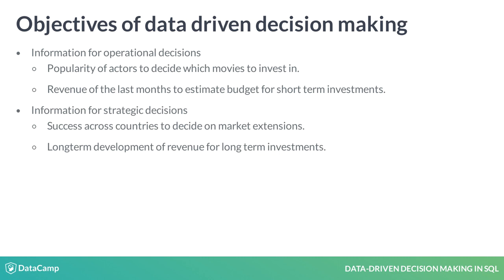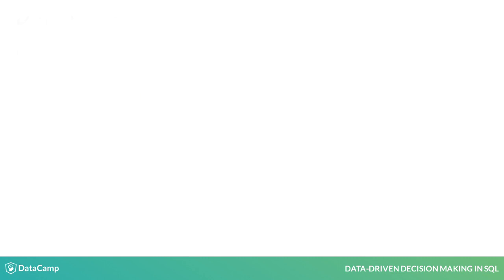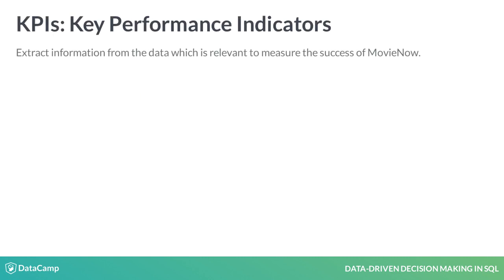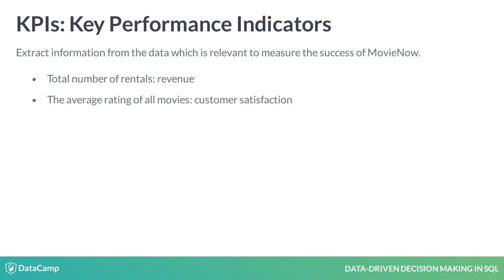Also, knowing the long-term development of overall revenue helps MovieNow plan long-term investments. Key performance indicators help a company or its subdivision define and monitor success. Revenue is a trivial indicator of success. For MovieNow, this is calculated as the sum of the prices for rented movies. For the subdivision Customer Relations Management, the KPI Customer Satisfaction could be quantified by the average rating of all movies.